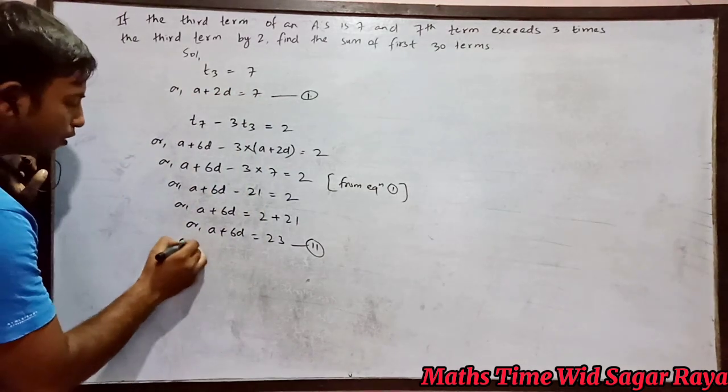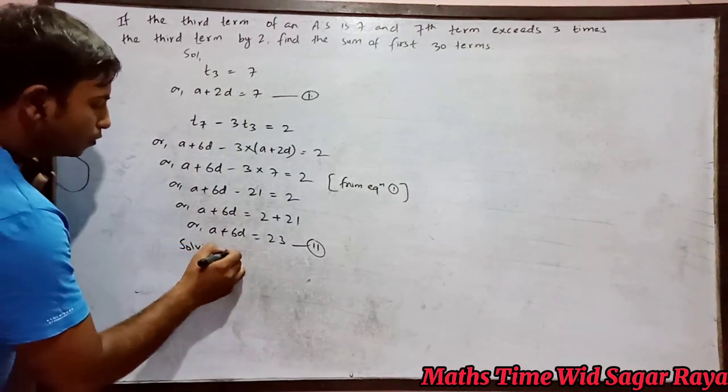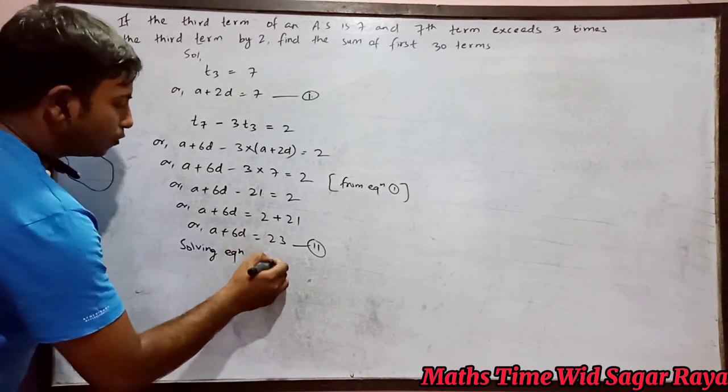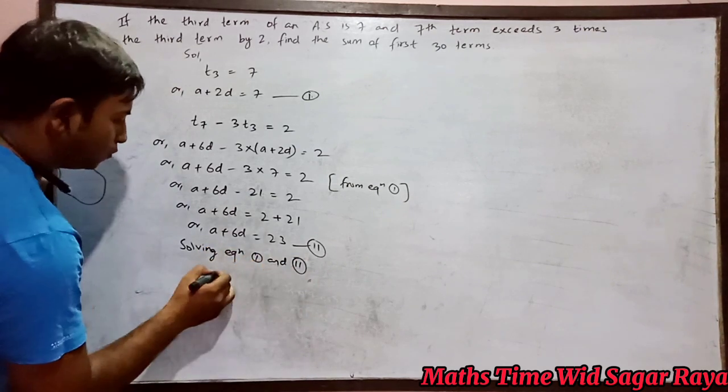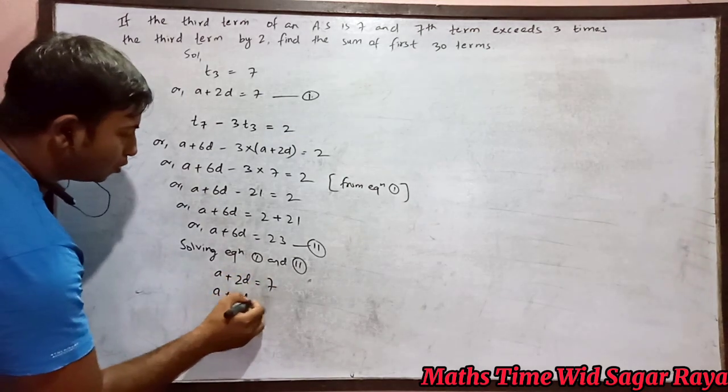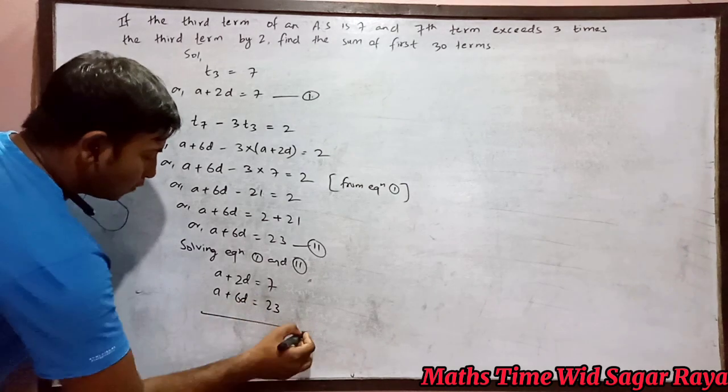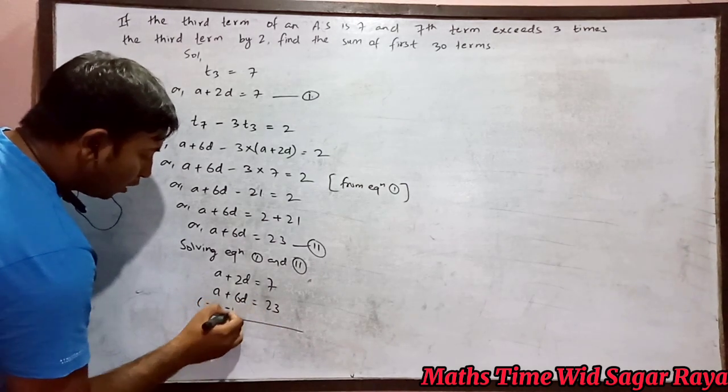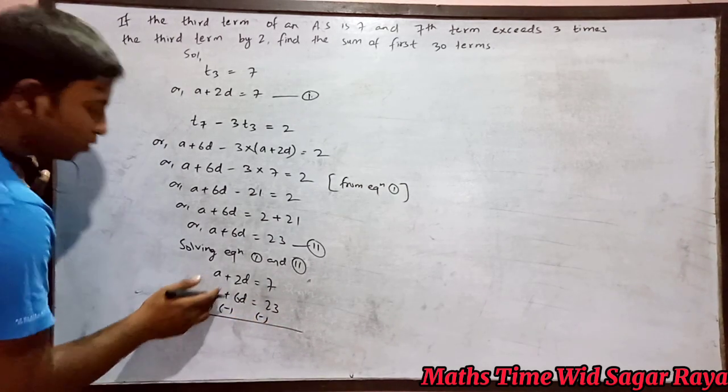Solving equation 1 and 2. First equation is a plus 2d equals 7. Second equation is a plus 6d equals 23. When you subtract both sides, then plus will change into minus.